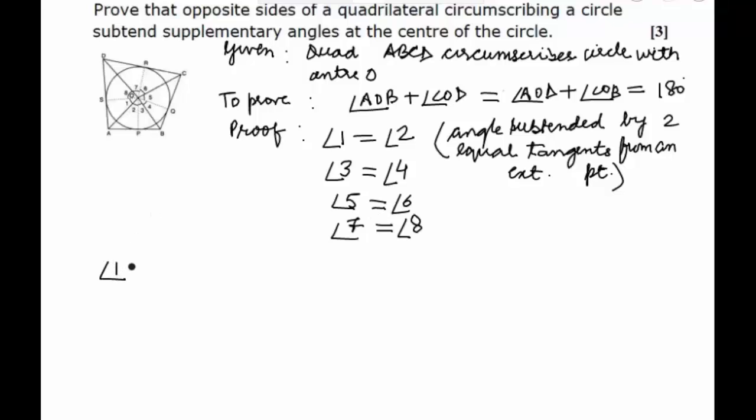So if we add all of these: angle 1 plus angle 2 plus angle 3 plus angle 4 plus angle 5 plus angle 6 plus angle 7 plus angle 8, this makes a complete circle at the center, so we say that this should be equal to 360 degrees.